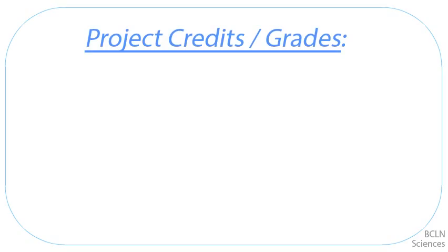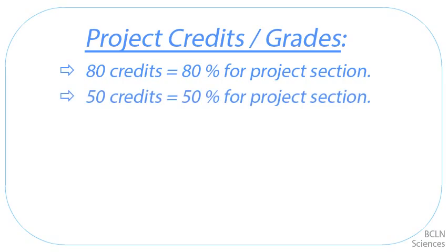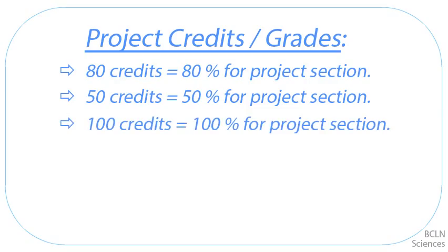The project portion of your course grade is based on you accumulating 100 credits. If you accumulate 80 credits, you'll get 80% in the project section. If you accumulate 50 credits, you'll get 50% in the project section. So for 100% in the project section, you need 100 credits. You get the drift. You can note the number of credits each project is worth in the table below.